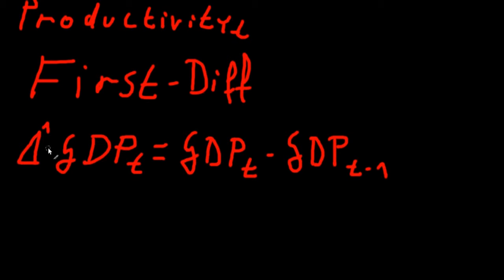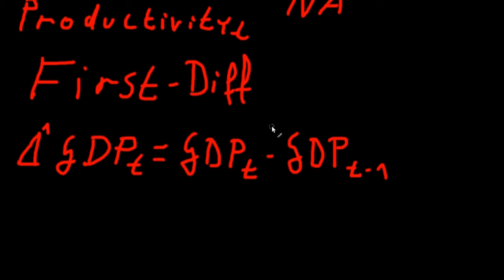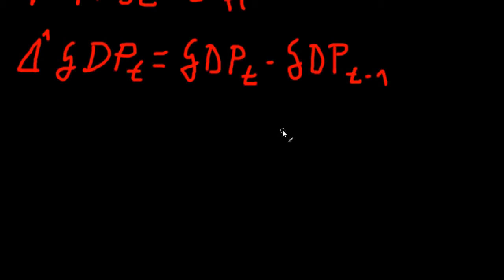Our data ranges from 1880 to 1913. Since there is no prior data point before 1880, when t equals 1880, R will tell us that the first data point of the first difference is NA — not available. We then rerun the ADF test on the first differences of both variables, and it tells us that our data is now stationary.